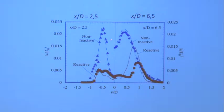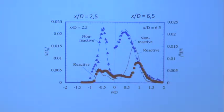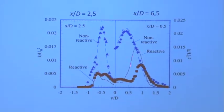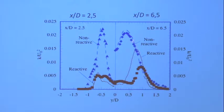This is the turbulent kinetic energy. For the non-reactive case it's shown in blue; once the flame is turned on, the kinetic energy goes down by a factor of three or four. Heat release very strongly attenuates turbulent kinetic energy, and it's important to capture this effect. The model is not perfect but captures the strong attenuation to some degree.